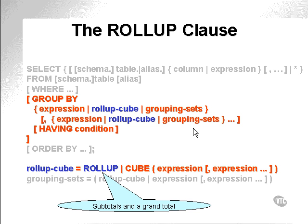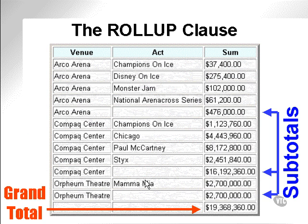Here's the syntax for the ROLLUP clause. ROLLUP has an expression list applied to it and produces subtotals and a grand total, looking something much like this, where we have a join on the Venue and Act tables and the Ticket table with the total values of tickets. In this case, we produce subtotals for each venue — indicated by the arrows — for Arco Arena, Compact Centre, and the Orpheum. A grand total is produced at the end.